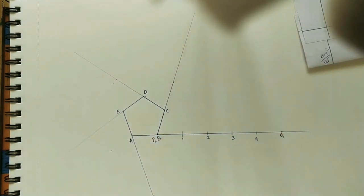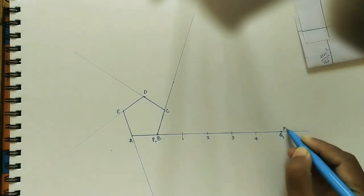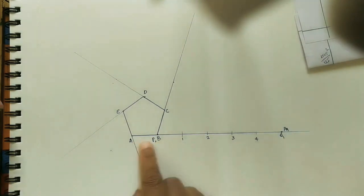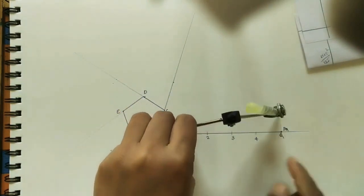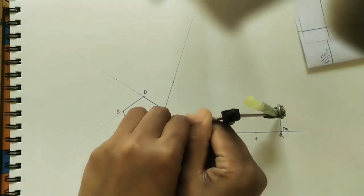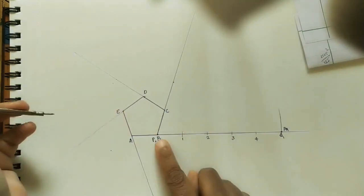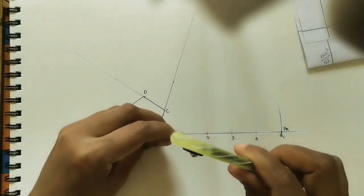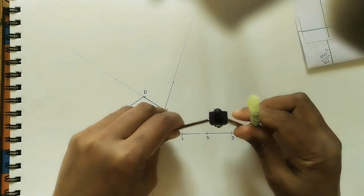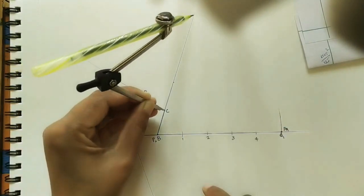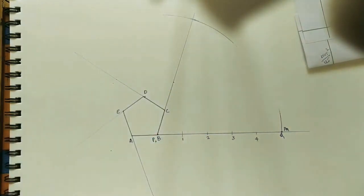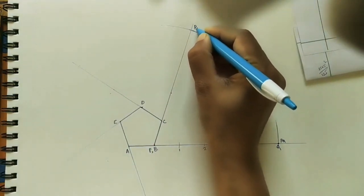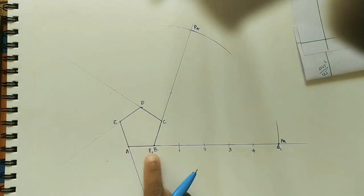Take first PQ length. On the first line, mark this PQ length at the Q point. By using compass, mark the same length. Just take one bigger arc at the Q point. That is the PQ length. Next take P4 length. Mark this P4 length on the second line at the C. Take the bigger arc so that at the end we can do the involute. Mark P4 length here, P4 point.